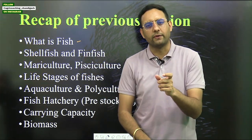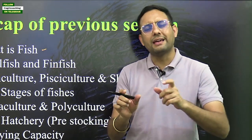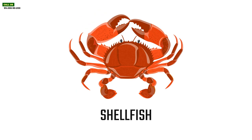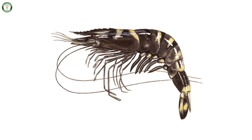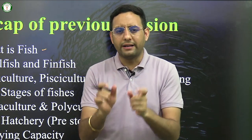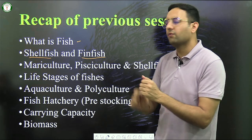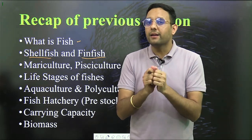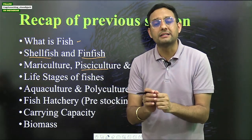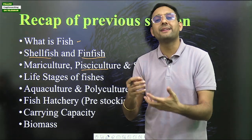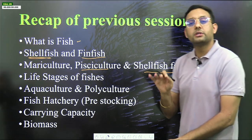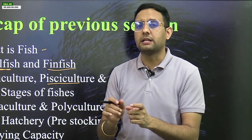In fisheries there are two terms: fish, which is known as finned fish or real fish, and shellfish, which are organisms that have a shell on their upper surface, like shrimp, prawn, or crab. Fisheries is divided into shellfish farming and finned fish farming. Rearing finned fishes is known as pisciculture, and farming shellfish is known as shellfish farming.